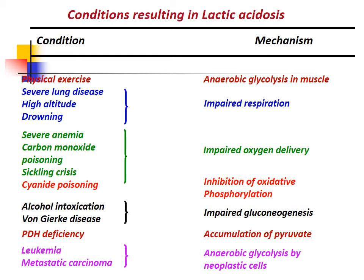Conditions resulting in lactic acidosis include: physical exercise causing anaerobic glycolysis in muscle; severe lung disease, high altitude, drowning, and impaired respiration; severe anemia, carbon monoxide poisoning, and sickling crisis causing impaired oxygen delivery; cyanide poisoning causing inhibition of oxidative phosphorylation; alcohol intoxication and von Gierke's disease causing impaired gluconeogenesis; pyruvate dehydrogenase deficiency causing accumulation of pyruvate; and leukemia and metastatic carcinoma with anaerobic glycolysis by neoplastic cells.